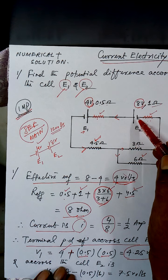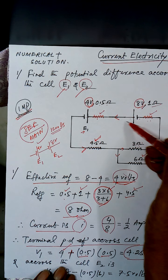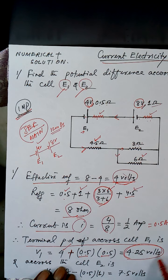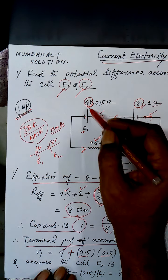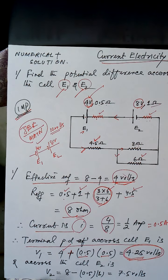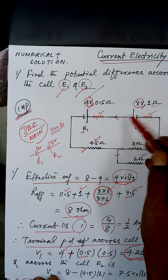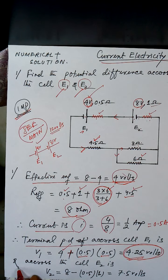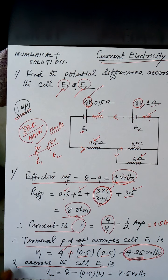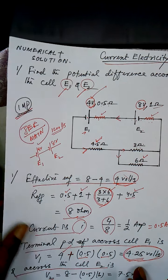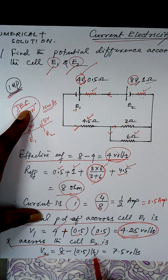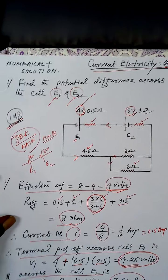The terminal potential difference across E1 is calculated as: V1 = EMF + current × internal resistance = 4 + 0.5 × 0.5 = 4.25V. This is an important result — E1 is being charged by E2, so its terminal voltage is greater than its EMF, which is characteristic of a cell under charging.